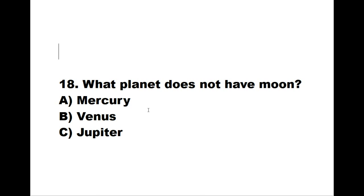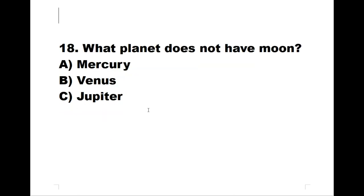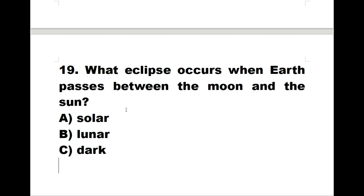Number eighteen: what planet does not have a moon? A: Mercury. B: Venus. C: Jupiter. The correct answer is B, Venus. Number nineteen: what eclipse occurs when the Earth passes between the moon and the sun? A: solar. B: lunar. C: dark. The correct answer is B, lunar.